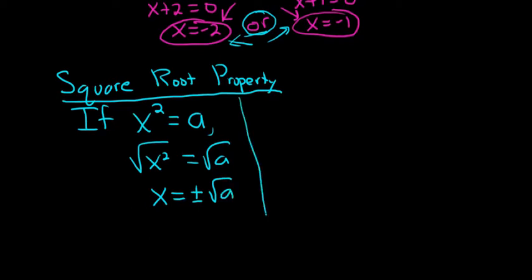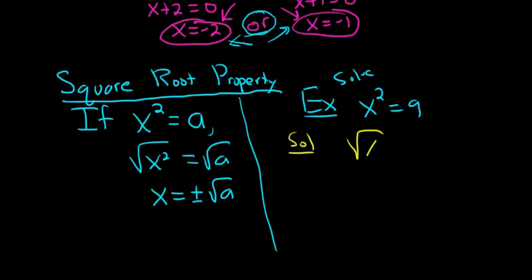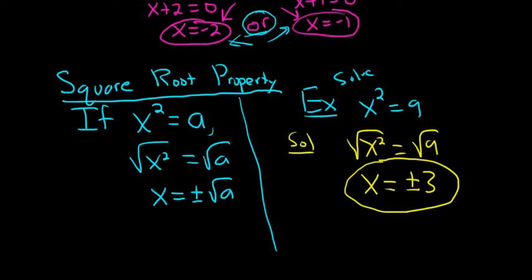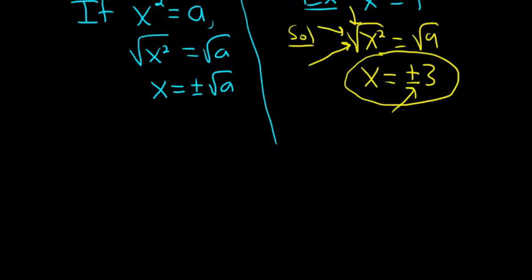For example, say we had x squared equals 9 and we're trying to solve for x. You start by taking the square root of both sides: square root of x squared equals square root of 9. Using the square root property, this becomes x equals plus or minus 3. Very important — you have to have the plus or minus. It's only when you take the square root of a variable squared that you have to put the plus or minus; the square root of 9 by itself is just 3.